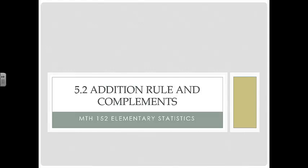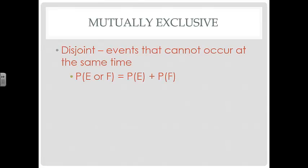Section 5.2: the addition rule and complements. The first term we need to look at is mutually exclusive. Two events are mutually exclusive when they are disjoint — mutually exclusive and disjoint are the same thing. This means they are events that cannot occur at the same time, so the probability of E or F is equal to the probability of E plus the probability of F.